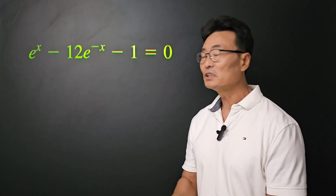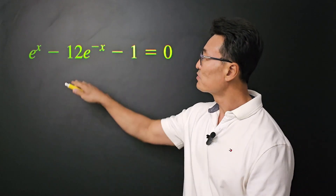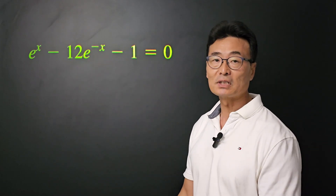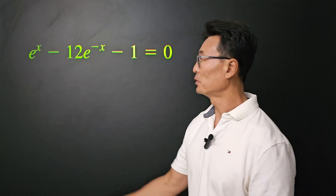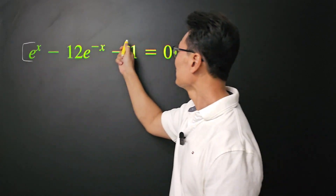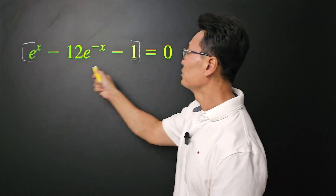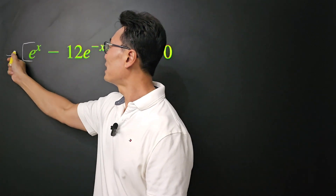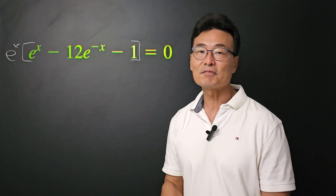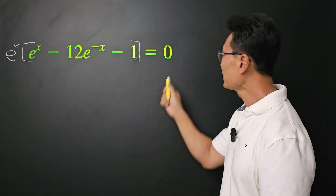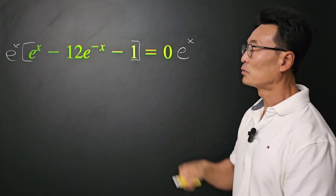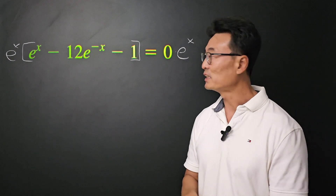To solve this equation, what I want to do is get rid of that negative exponent. So to do that, I'm going to multiply by e to the x on the left side of the equal sign and also e to the x on the right side of the equal sign.